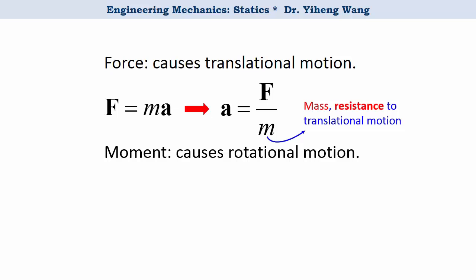And since moment causes rotation, can we write something similar and relate moment to the rotational motion of an object? Indeed we can. Similar to Newton's second law, moment equals I_m times the angular acceleration alpha. As you can see, moment and angular acceleration are both vectors, and they have the same direction.